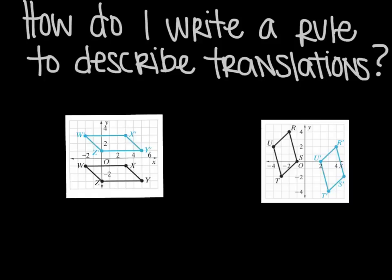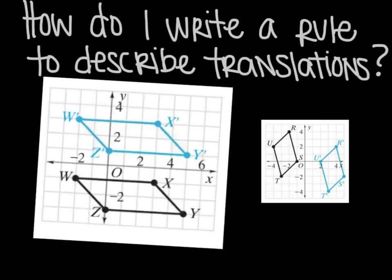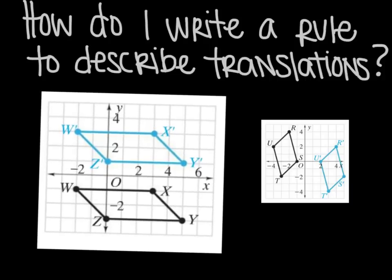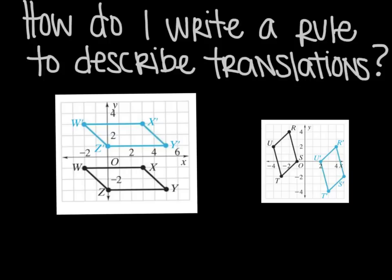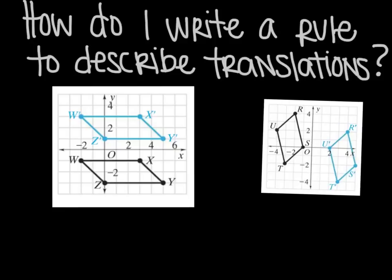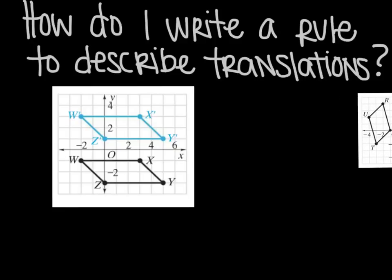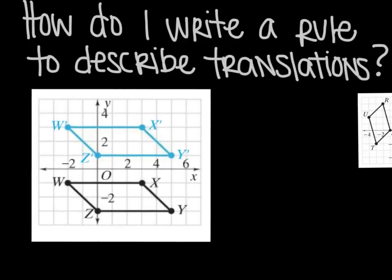Next question is, how do I write a rule to describe translations? So sometimes you'll be given a picture of a shape and its image. And then it'll be asked, well, what was the rule? And it's great to be able to say, you know, up this many or over this many. But you also want to be able to write a rule. And that's what I'm going to show you how to do right now.